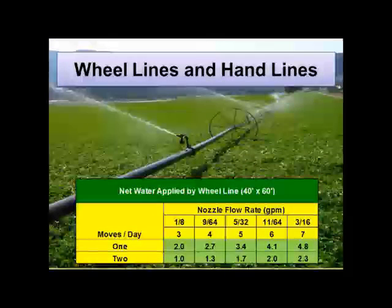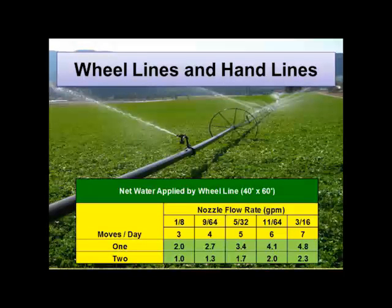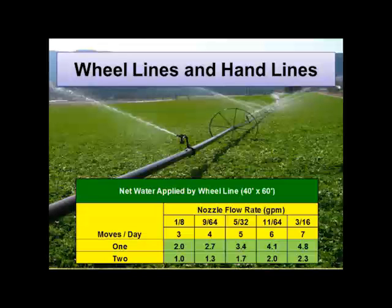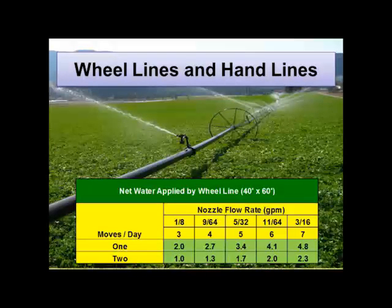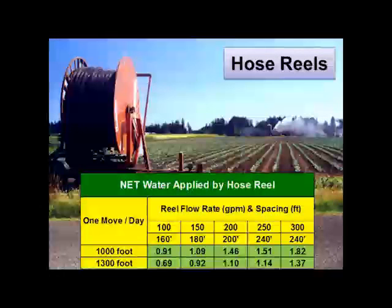With a hand line or wheel line, how much you apply depends on how many times a day you move it. One move per day with a 5 GPM nozzle, running 11½ hours, puts on 3.4 inches. Two moves per day — 11½ hours each — puts on 1.7 inches. It's all about the math: how fast the irrigation system puts water on, how much goes into the reservoir, and how fast the crop takes it out — determining how far across the field you can go before returning.